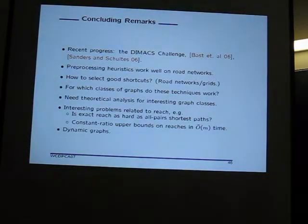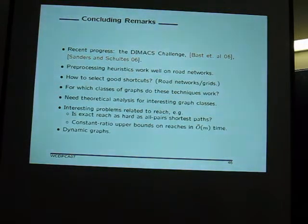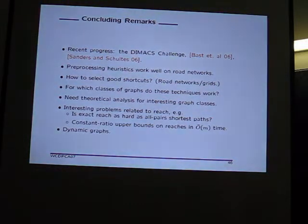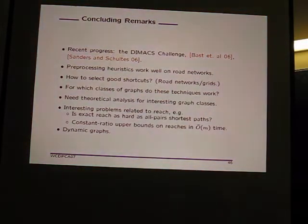There was a recent project during a DIMACS challenge where people discussed highway hierarchies, which are essentially a discrete version of reach. Vertices with moderate reach form one level of hierarchy, higher-reach vertices form the next level, and so on. At high enough reach, the graph becomes very loosely connected with a small number of vertices through which all inter-region shortest paths pass. The approach identifies these vertices and precomputes all-pairs shortest paths among them.